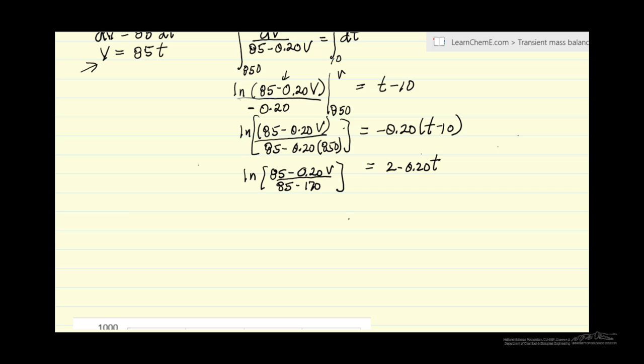Now I'll take the exponent of both sides. I'll bring this term, which is minus 85, into the denominator, times the exponent of minus 0.2 times t. We can rearrange and solve this equation for V. Remember this equation applies for t greater than 10 minutes, and the equation V equals 85t applies for time between 0 and 10.